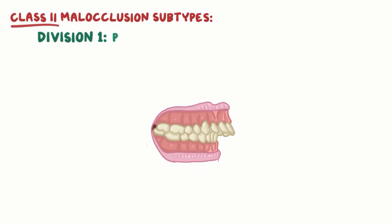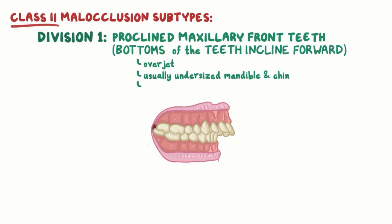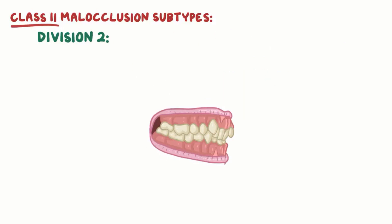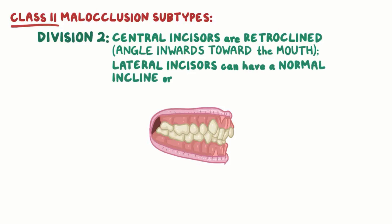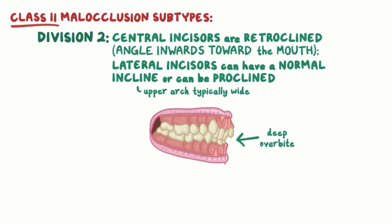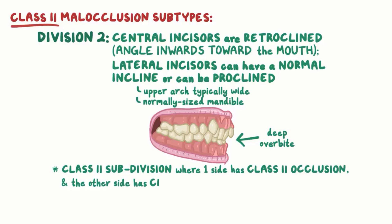Class II malocclusion also has subtypes. Class II division I is characterized by proclined maxillary front teeth, meaning the bottoms of the teeth incline forward, which gives them a protruding appearance. This results in an overjet of these teeth, often in the setting of an undersized mandible and chin. The upper arc is said to resemble a V shape. Class II division II represents the opposite situation where the central incisors are retroclined, or angle inwards toward the mouth, and the lateral incisors can either have a normal incline or can be proclined. The upper arc is typically wide, and affected individuals have a deep overbite, usually in the setting of a normal-sized mandible. There's also class II subdivision, which is where one side of the mouth has a class II occlusion, but the other side has a class I occlusion.